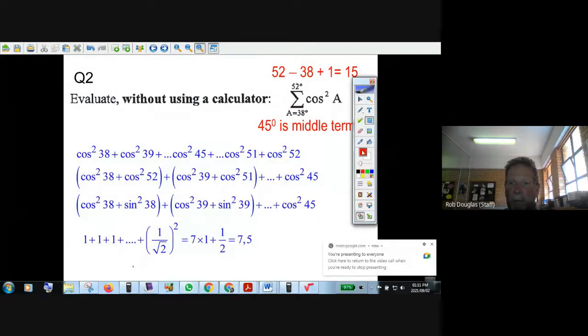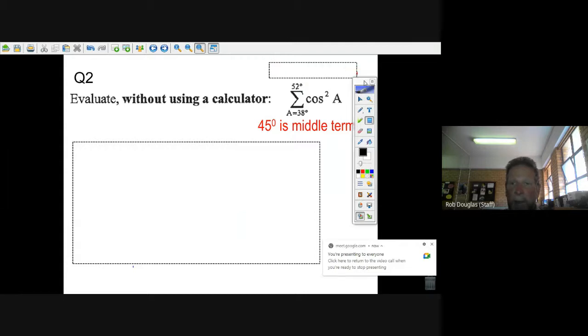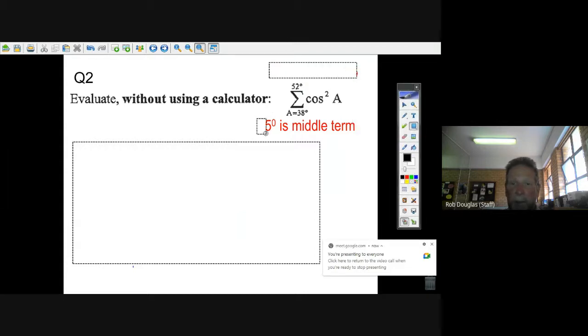Okay, we're going to do this question here. It's a kind of sigma notation question, but it's a little bit different, a bit strange, because what they put in for what normally are integers, they put in angles. Anyways, it says evaluate without using a calculator. Well, normally you start with a certain number and then you end with another number and you put in consecutive integers.